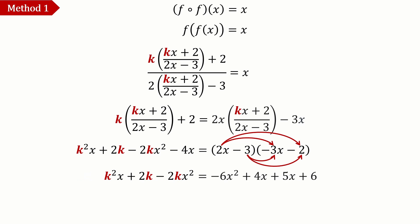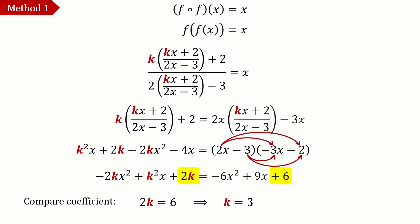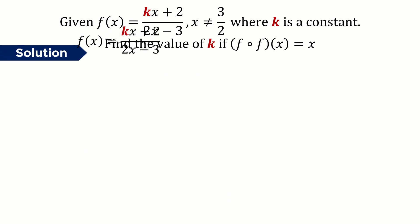Simplifying gives −6x² + 5x + 6. Bringing −4x to the right-hand side, the equation becomes −6x² + 9x + 6. Comparing coefficients: the constant on the left is 2k and on the right is 6, so 2k = 6, meaning k = 3. Comparing other coefficients gives the same answer, k = 3.